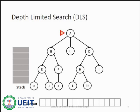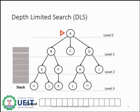Depth limited search can solve the drawback of the infinite path problem in depth first search. In this algorithm, the node at the depth limit will be treated as if it has no successor nodes further. Depth limited search is equal to depth first search with the addition of a limit for the level. The stack data structure will be used for this as well, along with an output array to display the final output. Information about levels is very important in depth limited search as we have to select the maximum level in advance up to which we want to run the searching algorithm.